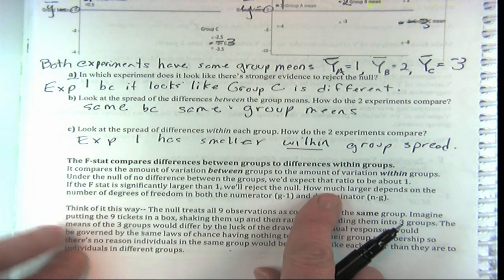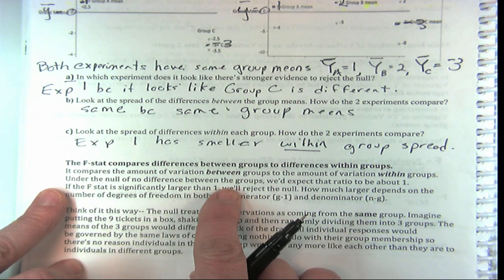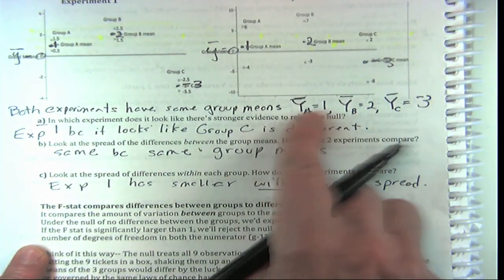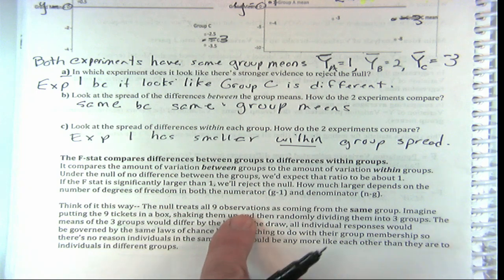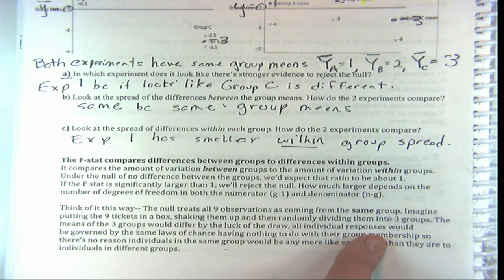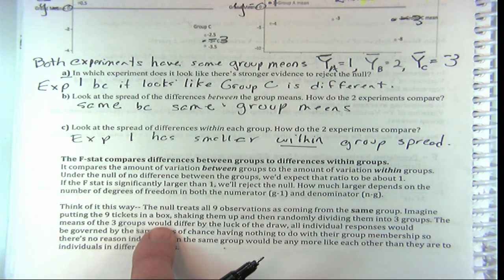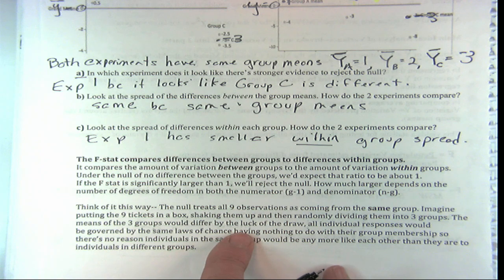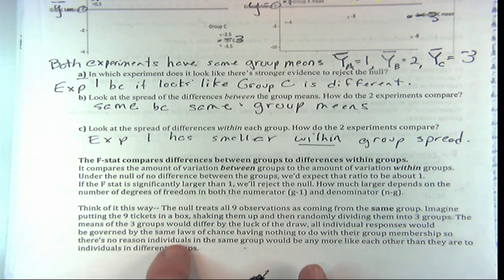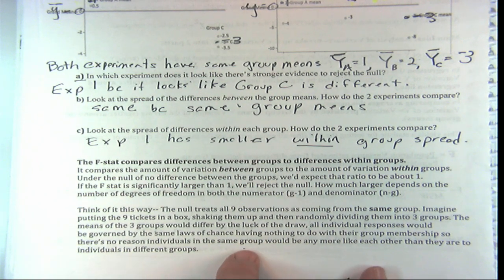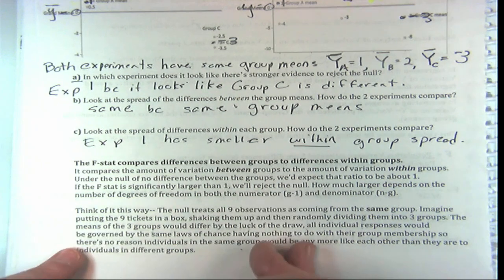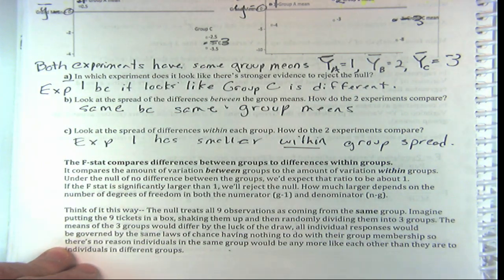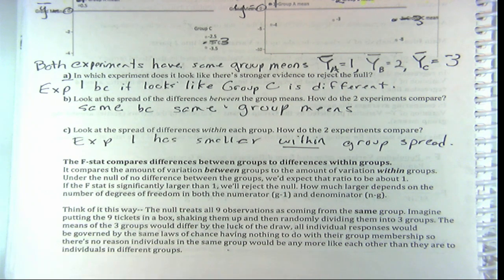Under the null of no difference between groups, we'd expect that ratio to be about one — the spread between groups would be no different from within. Think of it this way: treat all nine observations as coming from the same group. If you put the nine tickets in a box, shake them up, and randomly divide them into three groups, the means of the three groups would differ just by the luck of the draw. All individual responses would be governed by the same laws of chance, so there's no reason to think people in the same group would be more alike than people in different groups.